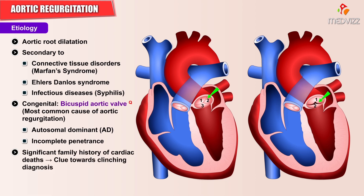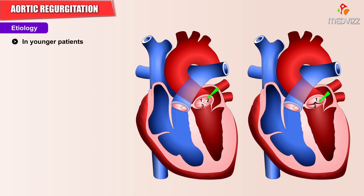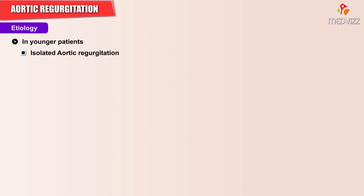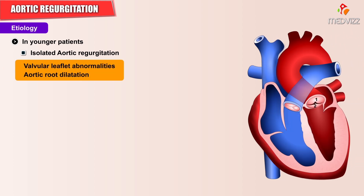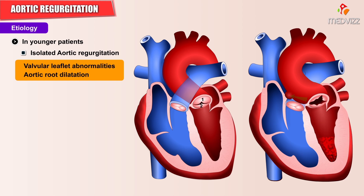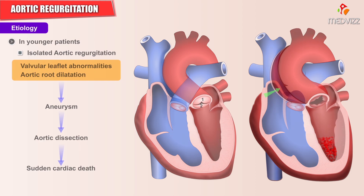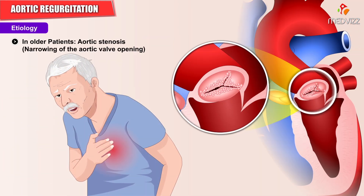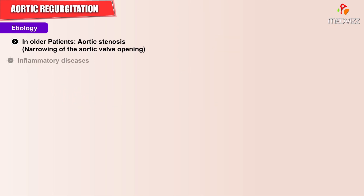A significant family history of cardiac deaths is a giveaway towards clinching the diagnosis. Younger patients can present with isolated aortic regurgitation due to valvular leaflet abnormalities or due to aortic root dilation, which can progress to formation of aneurysm and dissection causing sudden cardiac death. In older patients, it causes aortic stenosis.